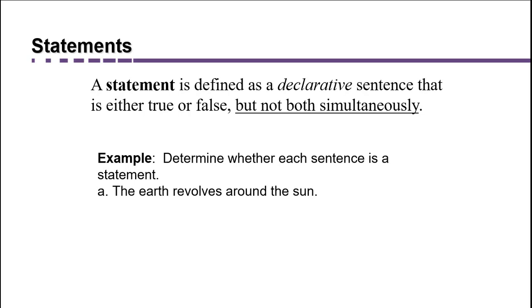A. The earth revolves around the sun. So this is a declarative sentence, and we can determine whether it's true or false, but it can't be both true and false simultaneously. So it's a logical statement.